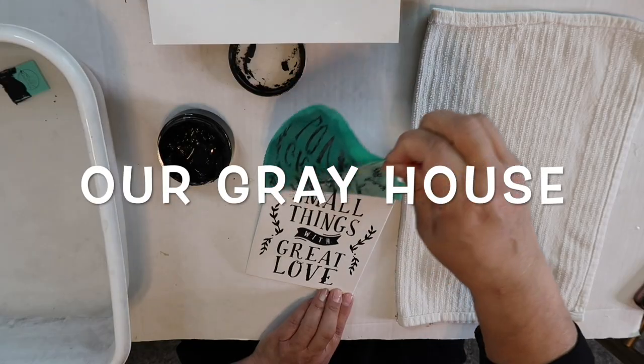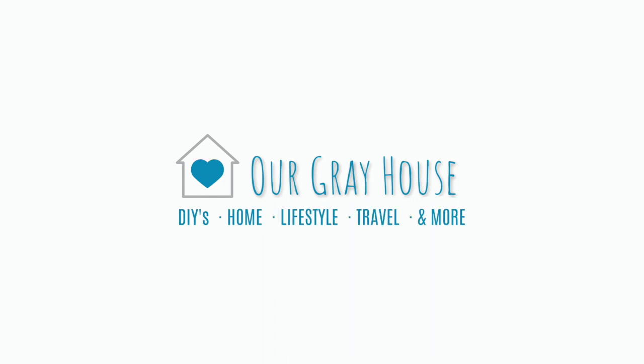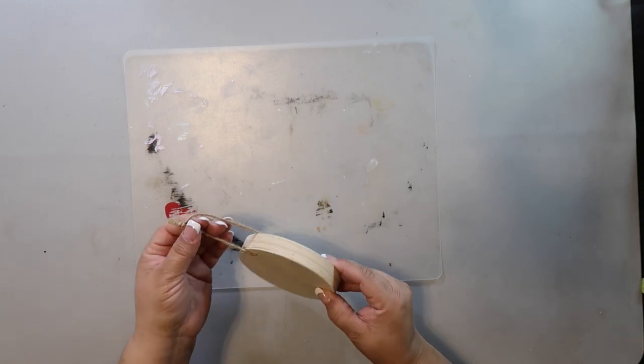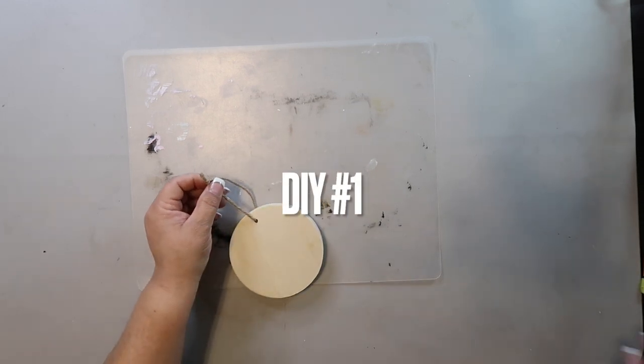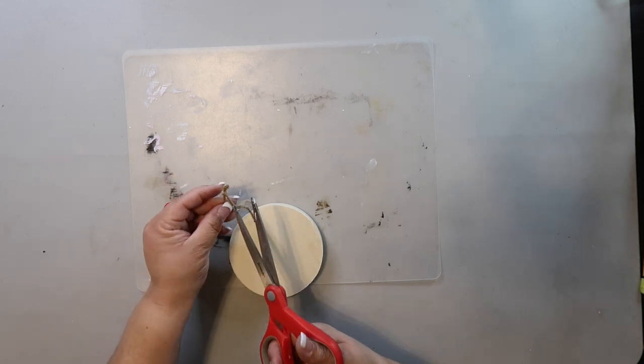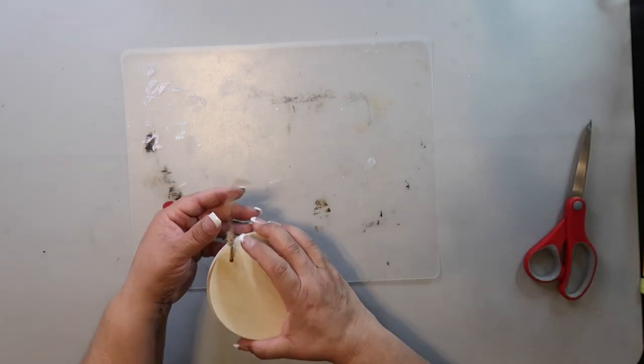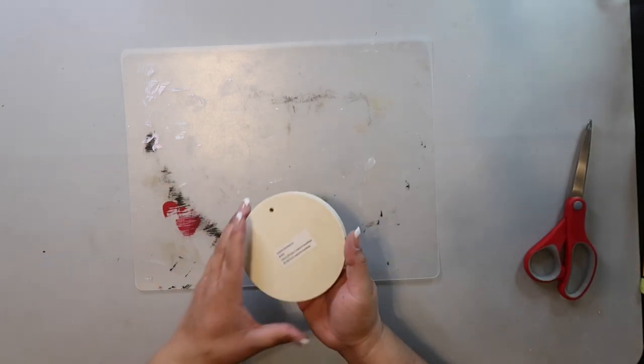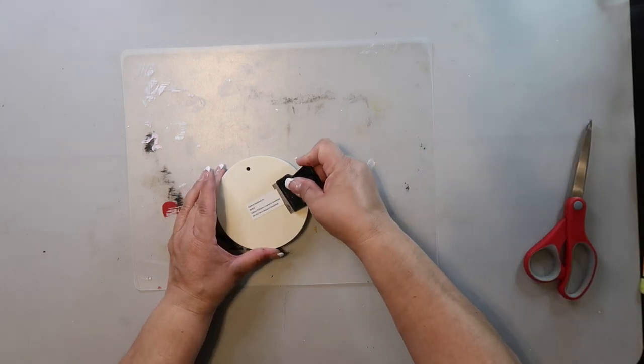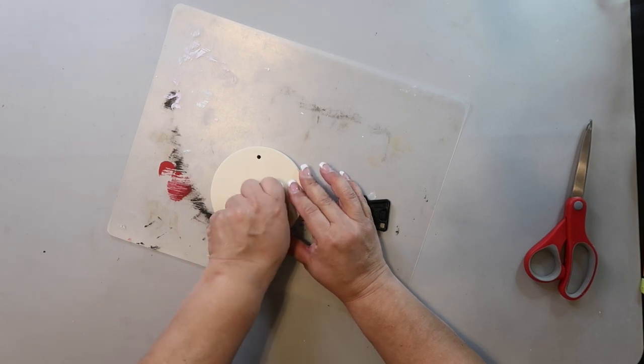For DIY number one, I'm taking this thick wood round from Dollar Tree and removing the jute hanger. I always save that stuff for another project. I also always remove the stickers as well. I use my little blade to try and scrape it off.